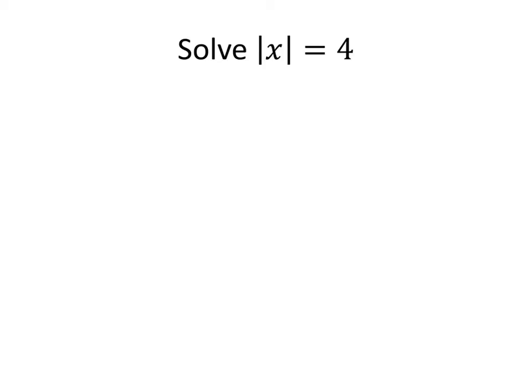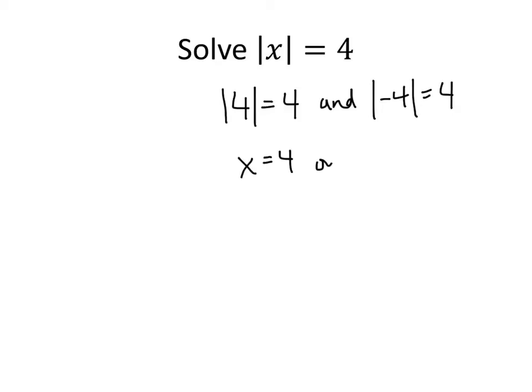We want to solve the equation the absolute value of x equals 4. So what values of x could we put into the absolute value in order to get that result? Well, certainly the absolute value of 4 is 4, but based on the way absolute values work, we also know that the absolute value of negative 4 is 4. So that means the possibilities are that x equals 4 or x equals negative 4.